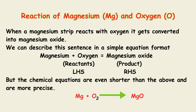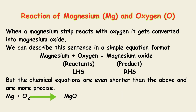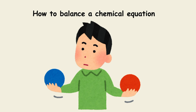The equation written in red color is the chemical equation for the reaction of magnesium and oxygen. Here, the symbol for magnesium is Mg and the symbol for oxygen is O. Thus, magnesium reacts with oxygen to give magnesium oxide.